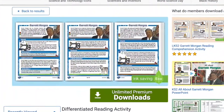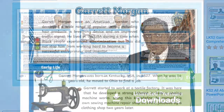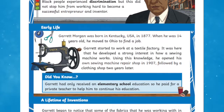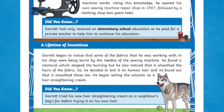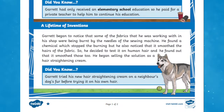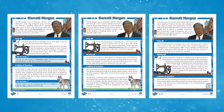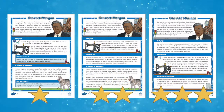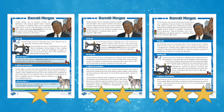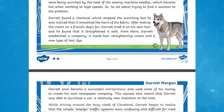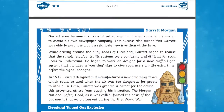When looking at Garrett Morgan, why not check out this differentiated reading activity. This is a super pack for your children to practise their inference skills and learn more about Garrett Morgan. Each comprehension has a choice of three differentiated levels for all abilities. The answer sheets are also included. This is the perfect resource if you're looking at inventors in your class.